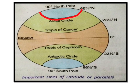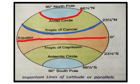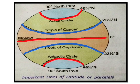The Arctic Circle is at 66.5 degrees north. The Tropic of Cancer is at 23.5 degrees north. 0 degrees is the equator. The Tropic of Capricorn is at 23.5 degrees south and the Antarctic Circle is at 66.5 degrees south. The North Pole is at 90 degrees north and the South Pole is at 90 degrees south.